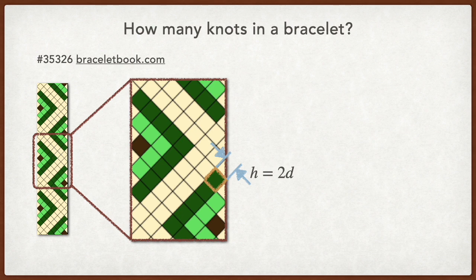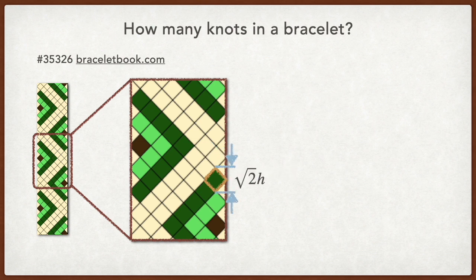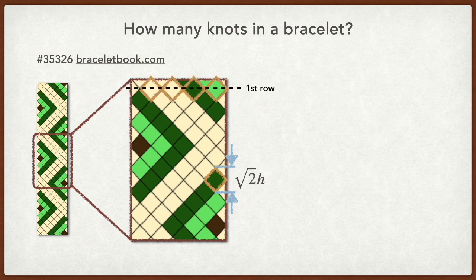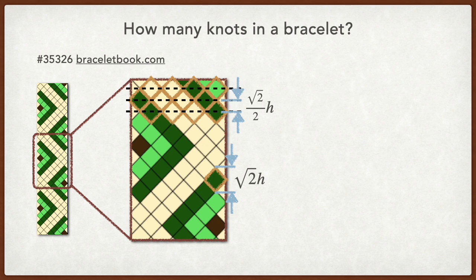After finding out how much string is used in one knot, we move on to calculate how many knots there are in one bracelet. As we can see, in a normal pattern, each knot is represented by a small diamond shape, with a side length of 2d. The height of the diamond is square root 2 times d. When we add one more row to the bracelet, we increase the total length by half a diamond height, which is square root 2 divided by 2 times d.